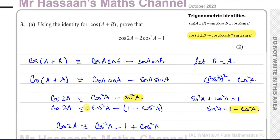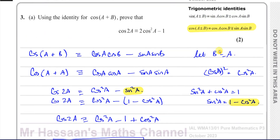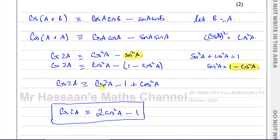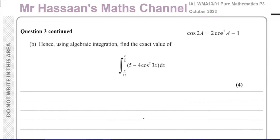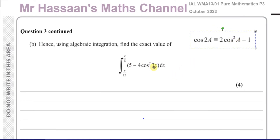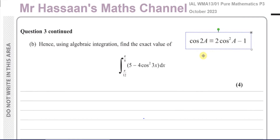That's the answer to Part A — we proved the identity using the addition formula; this is one of the double angle formulae. For Part B, 'hence' means using the identity we just proved. They're helping us here — Part A is a clue for Part B. They're asking us to use algebraic integration to find the exact value — so no decimal values, the answer should be in terms of square roots and pi — of the integral between pi over 8 and pi over 12 of 5 minus 4 cosine squared 3x with respect to x.